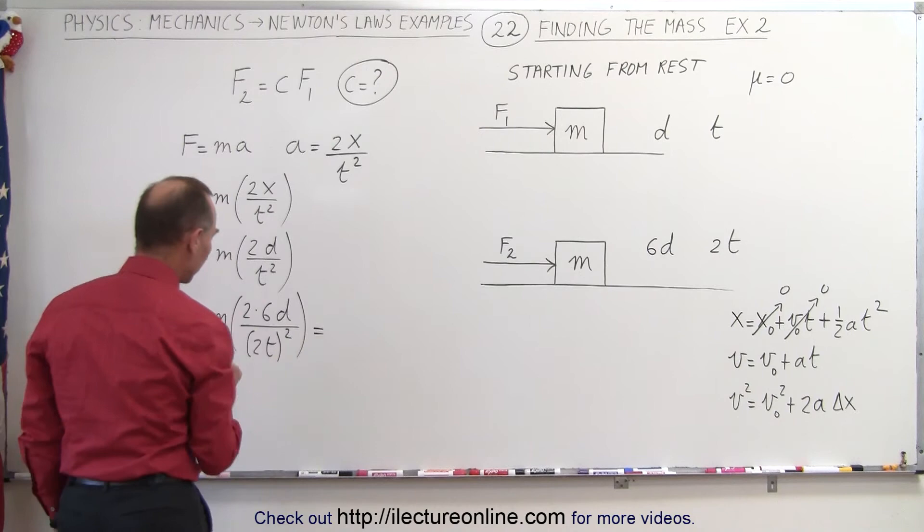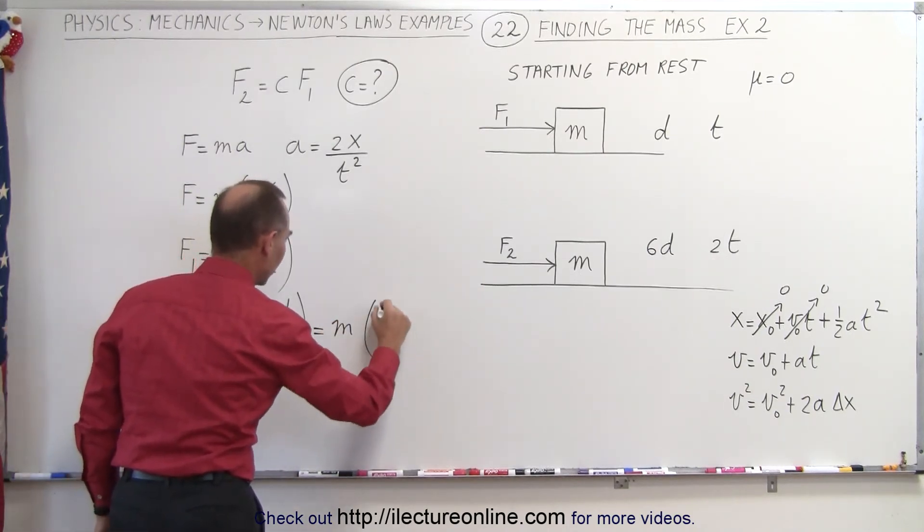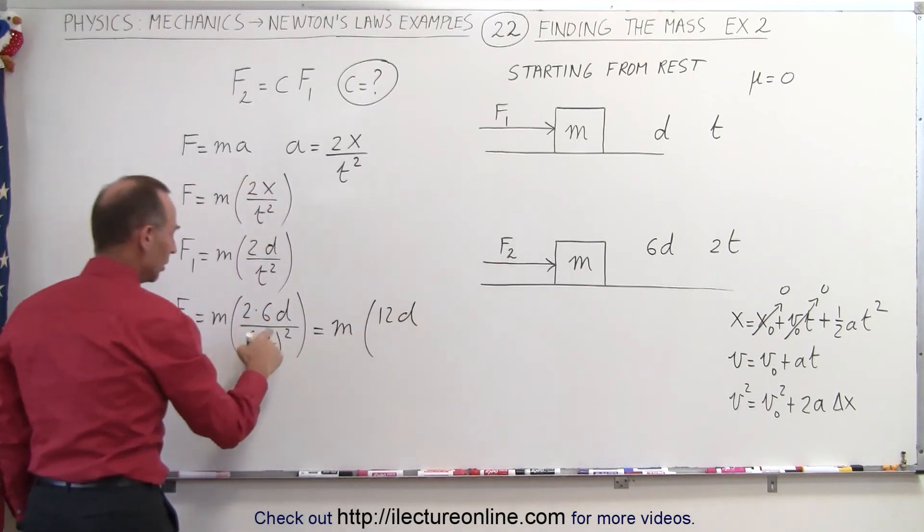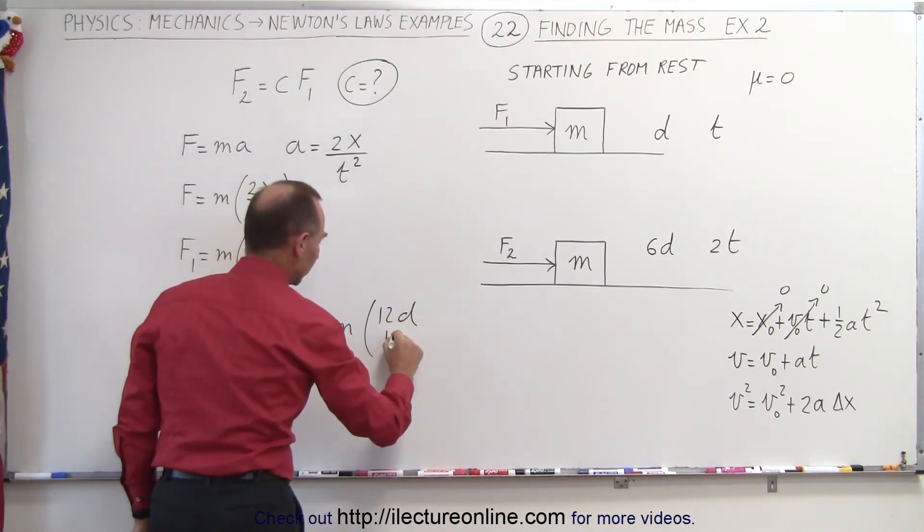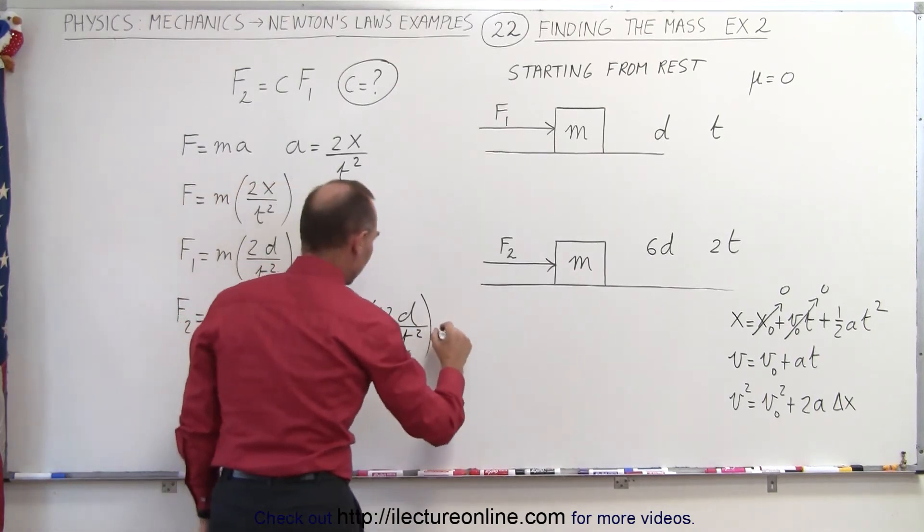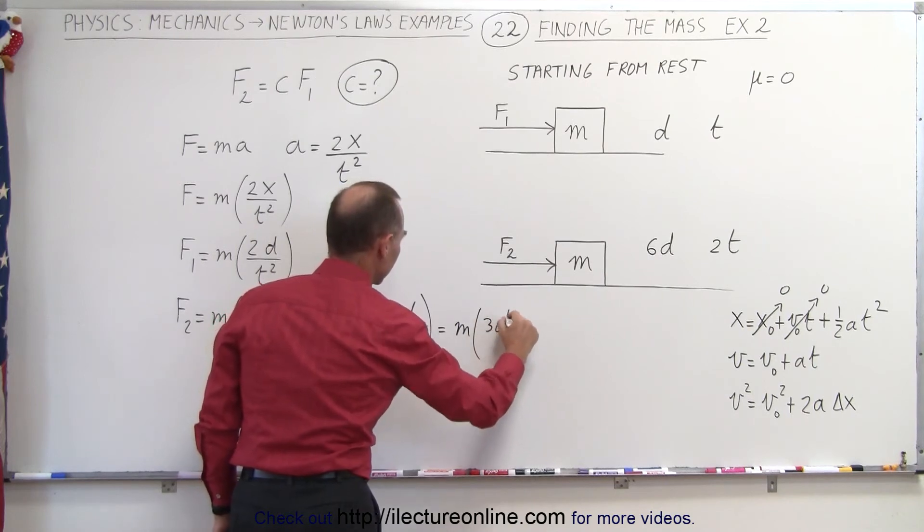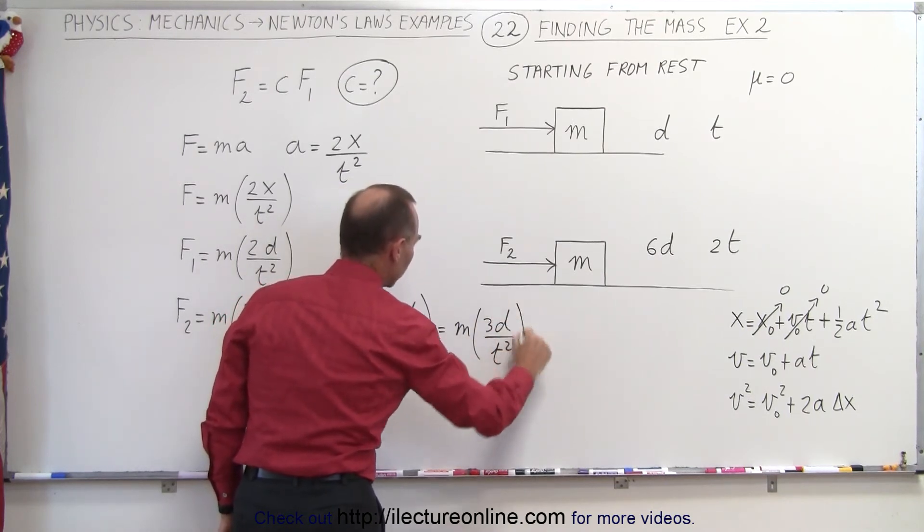So when we work that out, this gives us m times 12d divided by 4t squared, and then 4 goes into 12 three times, so this is equal to m times 3d over t squared.